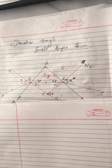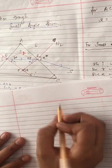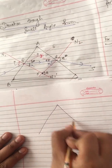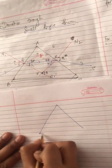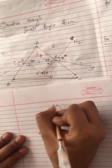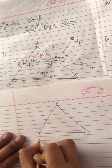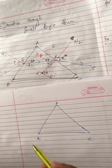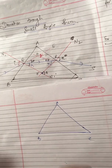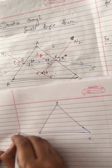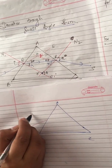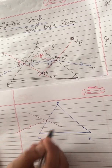Let me draw you a figure so that it will be easier for you to understand. The first one is a triangular structure — a triangular prism. Let me label this as A, B and C, as you can see in the figure as well.